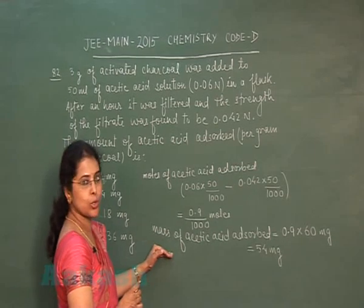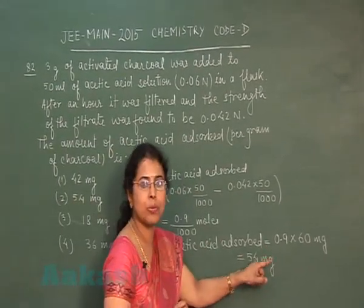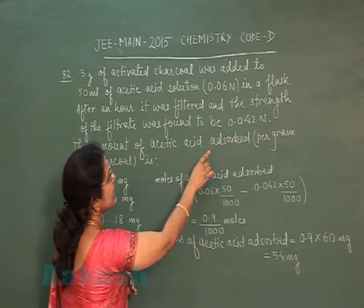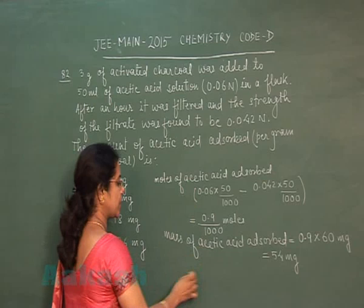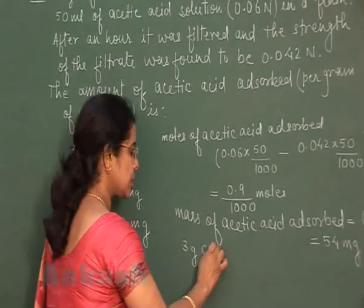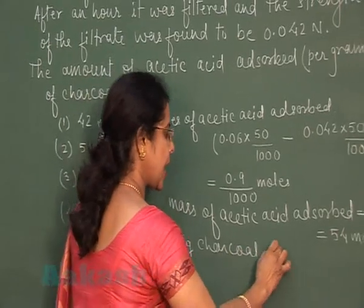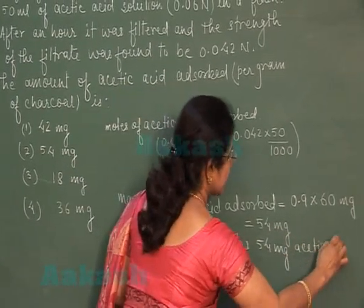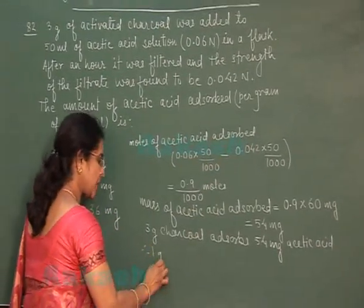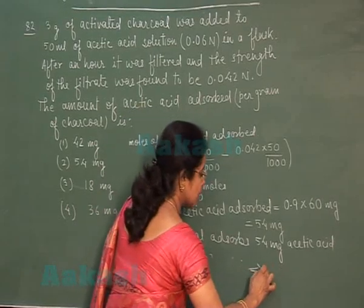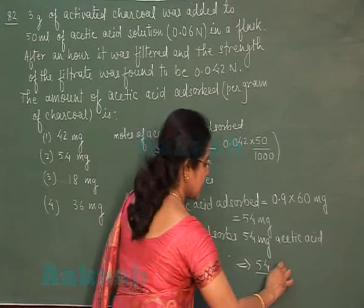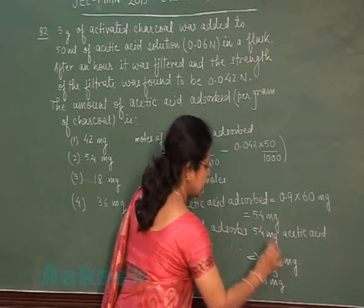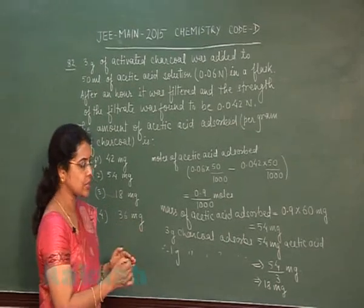Now, 3 grams of activated charcoal is used to adsorb 54 milligrams of acetic acid. We need to find the amount of acetic acid adsorbed per gram of charcoal. So 3 grams charcoal adsorbs 54 milligrams, meaning 1 gram charcoal will adsorb 54 by 3 milligrams, which equals 18 milligrams.